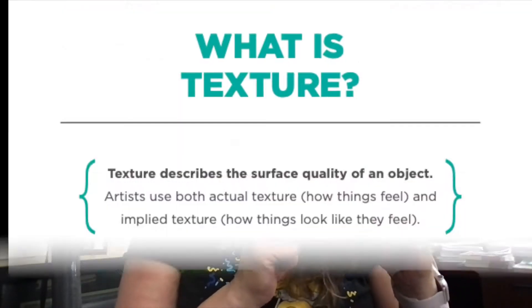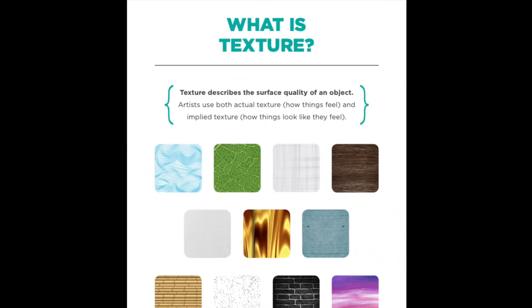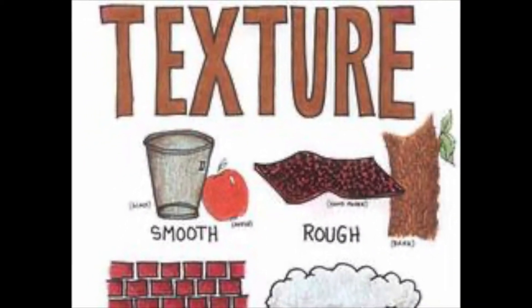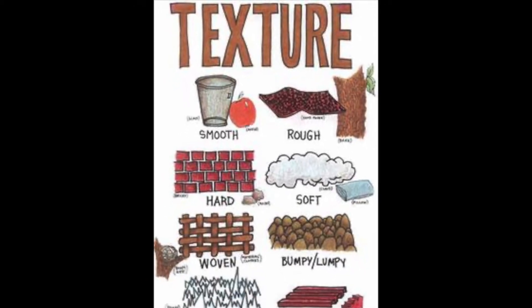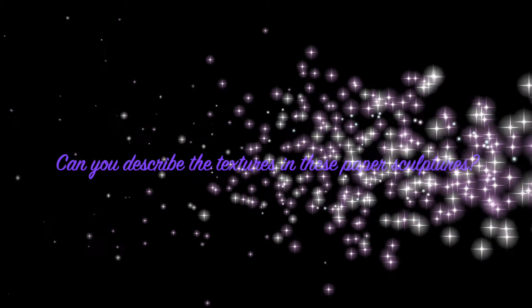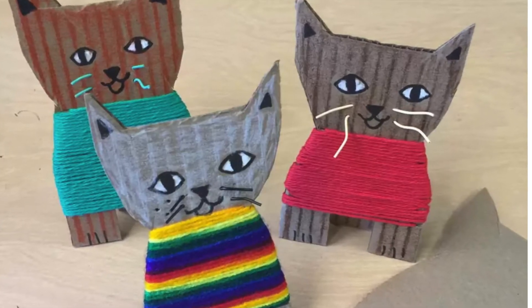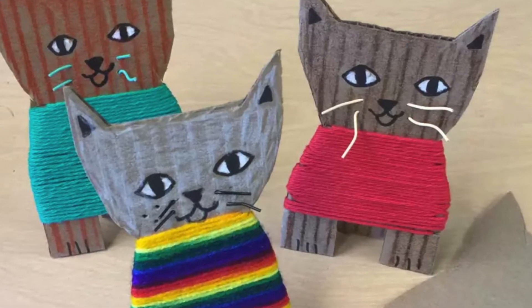What kind of sweater will your cat wear? Will it be fuzzy, rough, or smooth? In art, artists use both actual texture, how things feel, and implied texture, how things look like they feel, to convey a message. Your cat sweater has texture, so does your cat. Can you describe the textures in these paper sculptures? How will you describe the yarn used to make the sweater in your cat sculpture today?